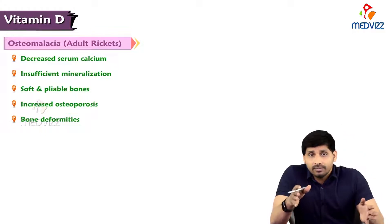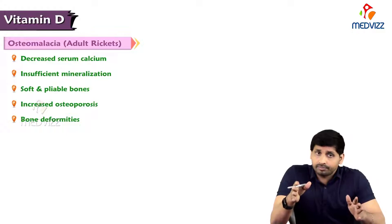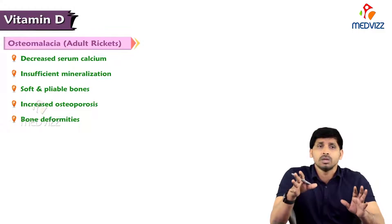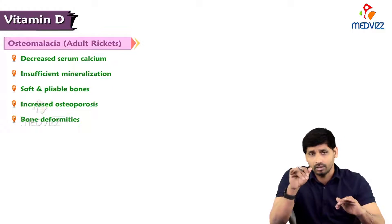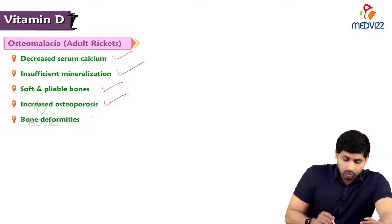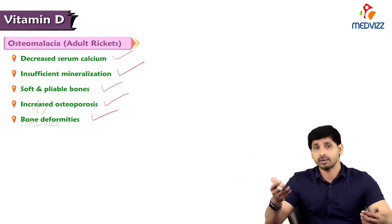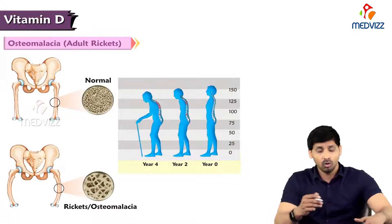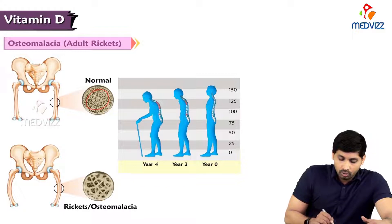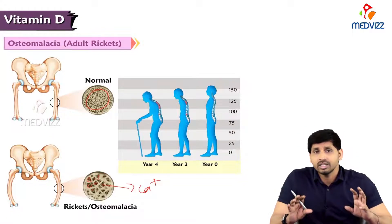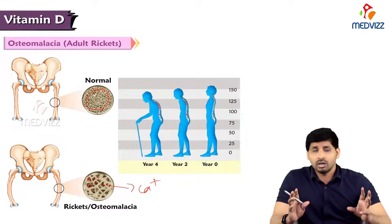The deficiency manifestation of vitamin D in adults is osteomalacia. Postmenopausal women and people over 50 years of age are commonly affected. Due to improper calcium metabolism, they may develop osteomalacia. It is characterized by decreased serum calcium, insufficient mineralization, soft and pliable bones, increased osteoporosis, and bone deformities. Calcium mobilizes away from the bones and accumulates in circulation, leaving bones soft and hollow with big holes, as seen in comparison to normal bone. With even minor impact, the bone has a 90–100% chance of fracture.